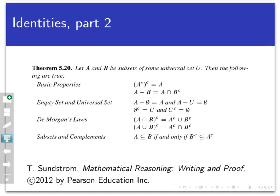Here's another set of identities that are a bit more off the beaten path. This one says that the complement of A complement is A. Another says that A minus B equals A intersect B complement — this one is so useful that we're going to prove it in just a minute. I also want to point your attention to DeMorgan's laws, which in this context say that the complement of an intersection is the union of the complements, and vice versa.